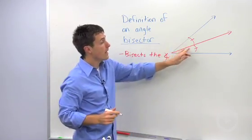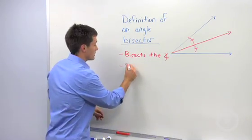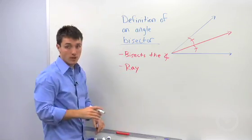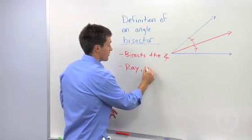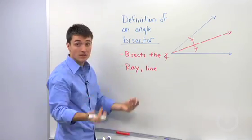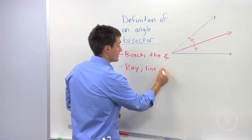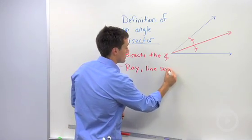So notice that this red is a ray, so that's another key thing. Now it also could be a line segment, if you're talking about something in an isosceles triangle perhaps, so we could say, or a line segment.